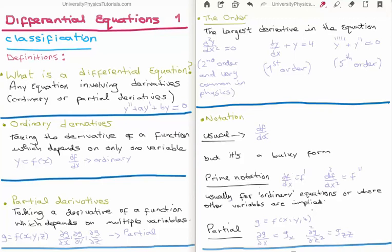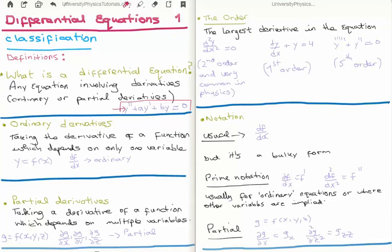So first of all, we need to ask ourselves: what is a differential equation? A differential equation is any equation involving derivatives. These derivatives can be ordinary or partial derivatives. Looking at the equation in purple, if you take the second derivative of y, add to it a constant multiplied by the first derivative of y, add a constant times y, and set that equal to zero — this is a differential equation.